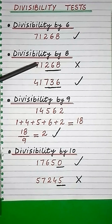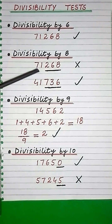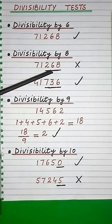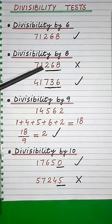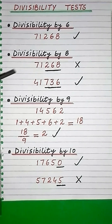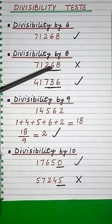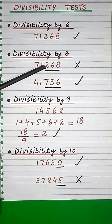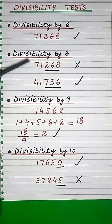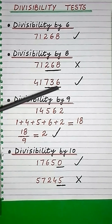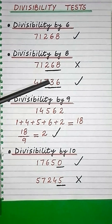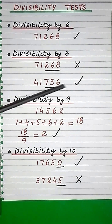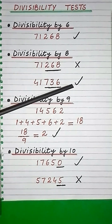A number is divisible by 8 only if its last three digits make a number which is also divisible by 8. Like here in the first case, the last three digits make a number which is not divisible by 8, so this number is also not divisible by 8. And in the second case, the last three digits make a number which is divisible by 8, so this number is also divisible by 8.